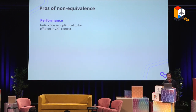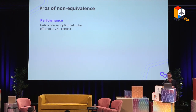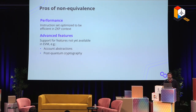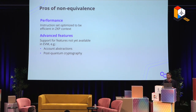Why would you build something non-EVM-equivalent? Performance is one reason — EVM has design choices like using 32 bytes and specific hash functions that are not very efficient in a ZKP context. Another benefit is advanced features: there's a tension between adhering to standards and innovating, and with more flexibility you can build in new features like account abstractions or post-quantum cryptography. Safety is another benefit — EVM has features like dynamic function calls where you don't know call targets statically, and you can disable those in a new architecture.